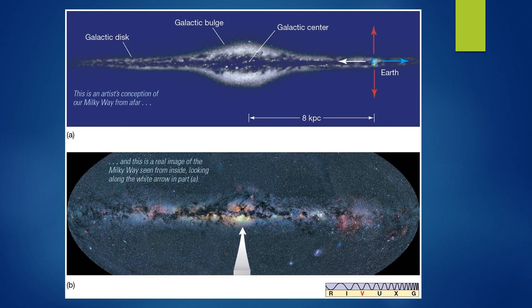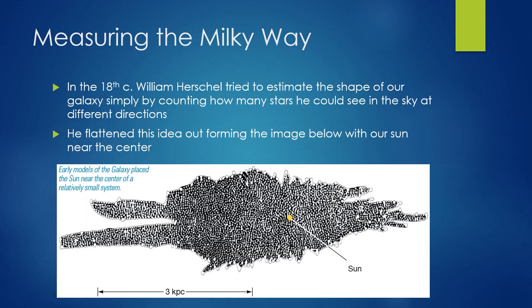Let's review: galactic disc, galactic bulge, galactic center. This is an artist's conception of the Milky Way from afar, and this is a real image of the Milky Way from the inside — looking along the white arrow towards the galactic center. In the 18th century, William Herschel tried to estimate the shape of our galaxy simply by counting how many stars he could see in the sky at different directions at night.